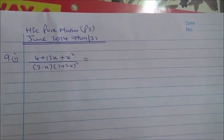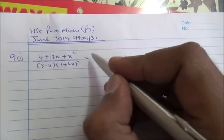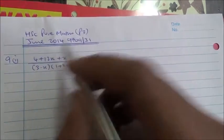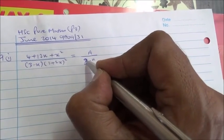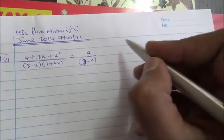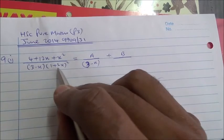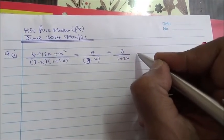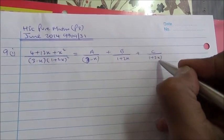Okay, so let's do it. For the first part, we need to express this in partial fractions. It's going to be equal to A/(3 - x), plus B/(1 + 2x), plus C/(1 + 2x)².